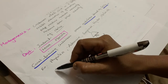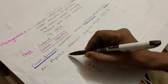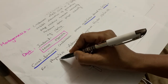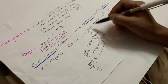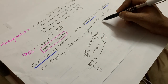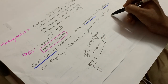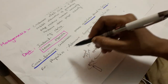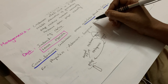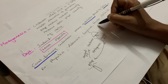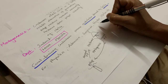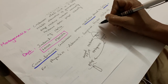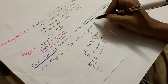Examples of cnidarians include Physalia, known as the Portuguese Man-of-War, Adamsia, Gorgonia, Hydra, Obelia, and others. These are the key characteristics of Phylum Cnidaria. Happy studying!